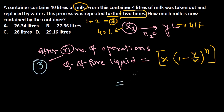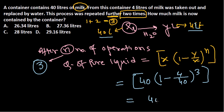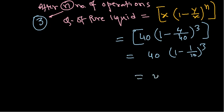So n is equal to 3. We now have all values: x equals 40 liters, y equals 4 liters, and the number of operations n equals 3. So the formula gives us: 40 multiplied by (1 minus 4 divided by 40) to the power 3. Here 4 divided by 40 simplifies to 1 by 10.